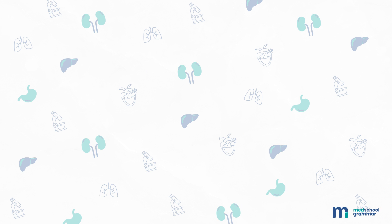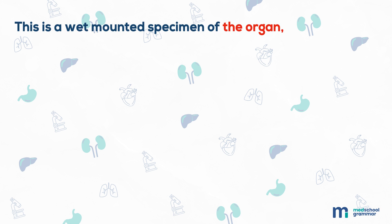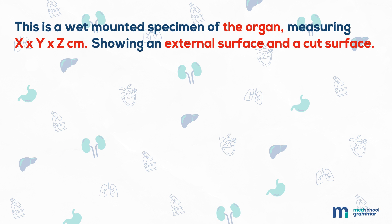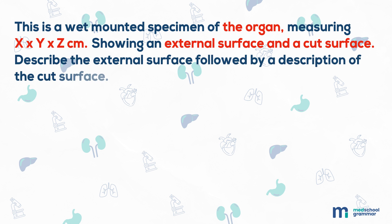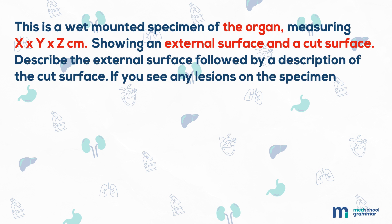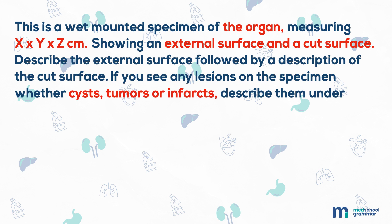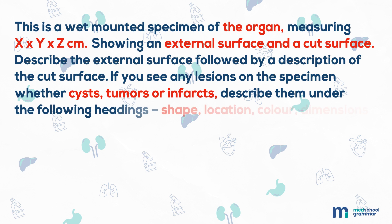From all sides, you begin with the words: 'This is a wet mounted specimen of the organ measuring x by y by z centimeters, showing an external surface and a cut surface.' You then go on to describe the external surface, followed by a description of the cut surface. If you see any lesions on the specimen — whether cysts, tumors, or infarcts — describe them under the following headings: shape, location, color, dimensions, and appearance.